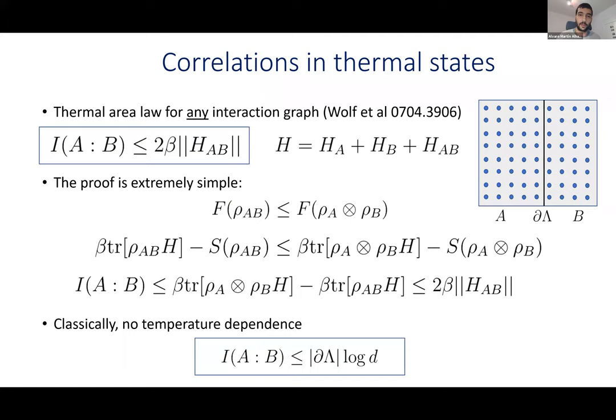Let me talk about the first area law for thermal states. It's from a paper by Wolf et al., from the MPQ group a few years ago. The area law is: the mutual information is bounded by two times the inverse temperature times the norm of the interaction Hamiltonian, where this term scales like the boundary between regions A and B. The proof of this statement is extremely simple — I can show it to you in three lines. It's the only proof I'll show fully because it's the simplest.